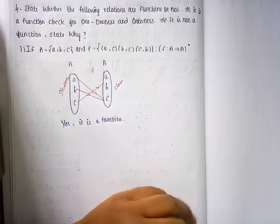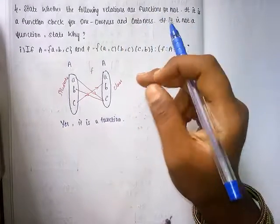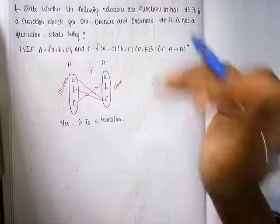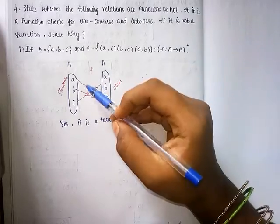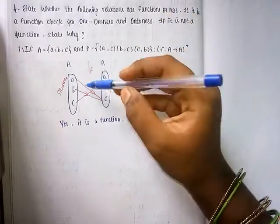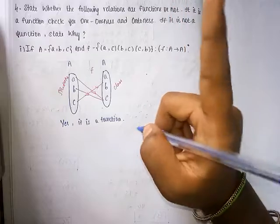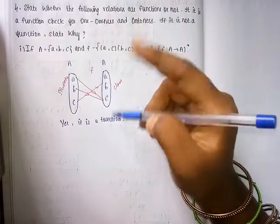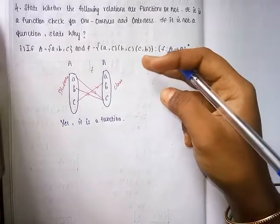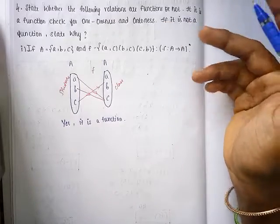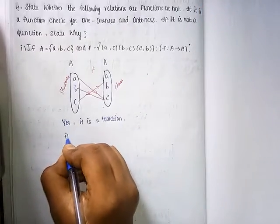Okay, so what do we say about this function? Check for onto-ness and one-to-one-ness. If this function is an onto function, we can check it. One student goes to one classroom — this could be a one-to-one function. But here, more than one student goes to one class, making it a many-to-one function. Therefore, it is not a one-to-one function.